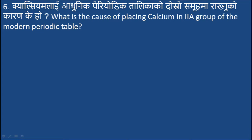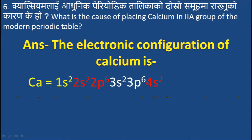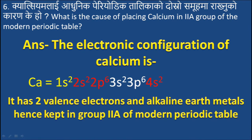Question 6: What is the cause of placing calcium in Group IIA of the modern periodic table? Answer: The electronic configuration of calcium is 1s², 2s², 2p⁶, 3s², 3p⁶, 4s². It has 2 valence electrons and is an alkaline earth metal, hence it is kept in Group IIA of the modern periodic table.